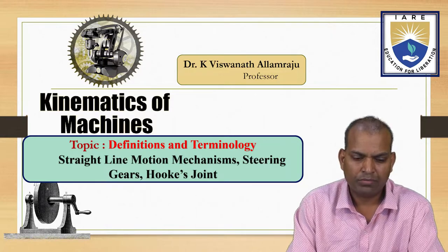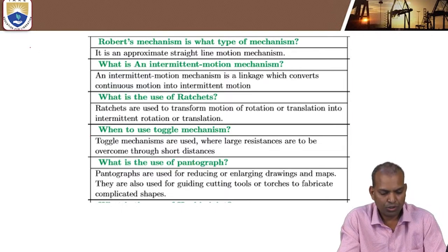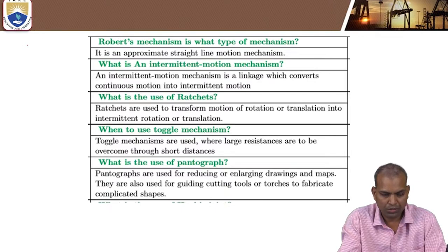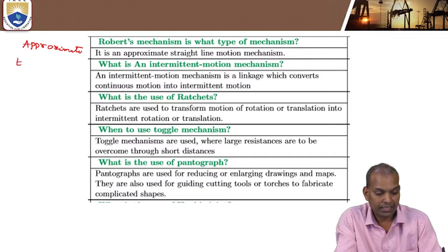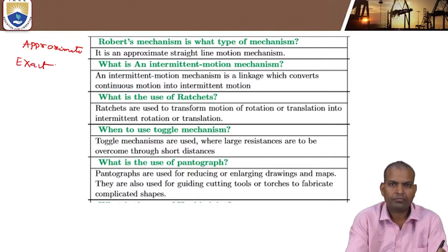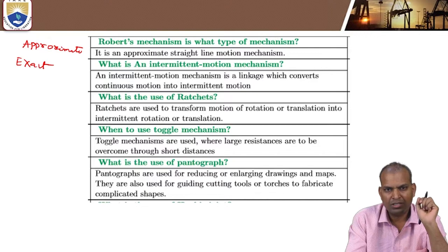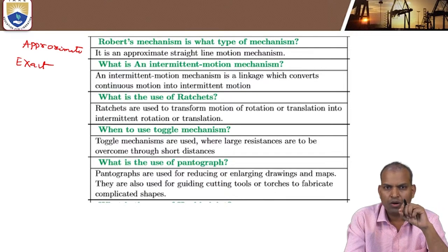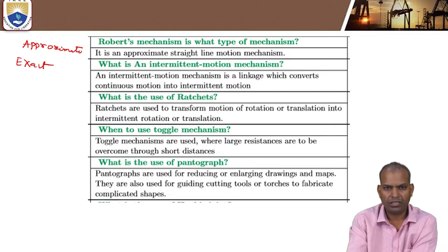What is the straight line motion mechanism and what are its types? In straight line motion mechanisms there are two types: one is approximate straight line motion mechanism and another one is exact straight line motion mechanism. The straight line motion mechanism is a mechanism such that the locus of any point on any link is a straight line — it can be either vertical or horizontal.